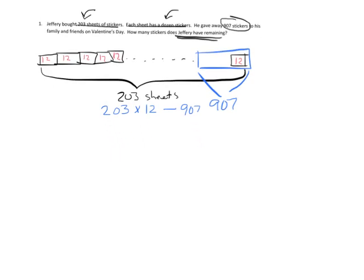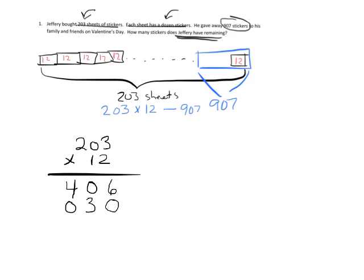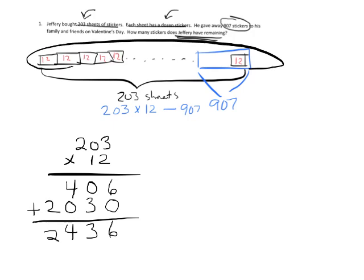The first thing we're going to do is multiply 203 times 12, using that standard algorithm. We begin by multiplying by 2: 2 times 3 is 6, 2 times 0 is 0, 2 times 2 is 4. Now multiplying by the 1, which is really a 10, so it ends in a 0: 1 times 3 is 3, 1 times 0 is 0, 1 times 2 is 2 — giving us 2,030. Adding together gives us 2,436 stickers in total.